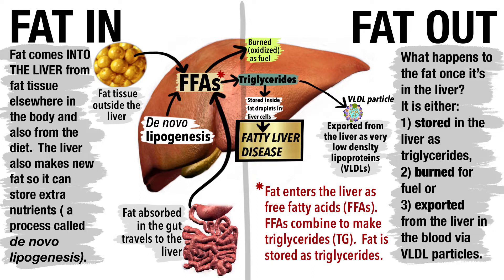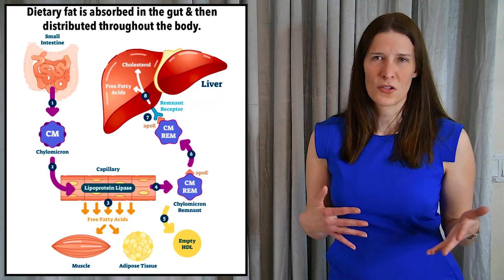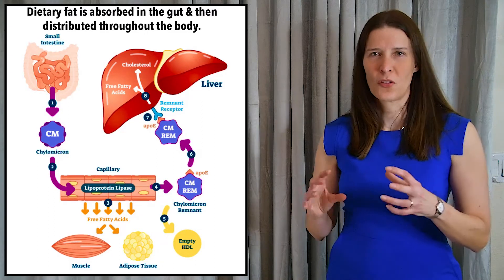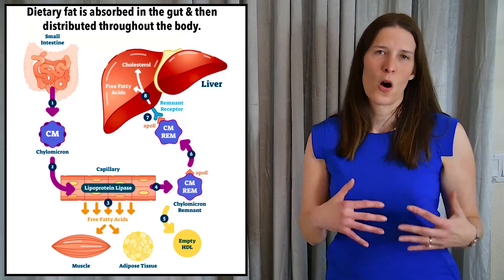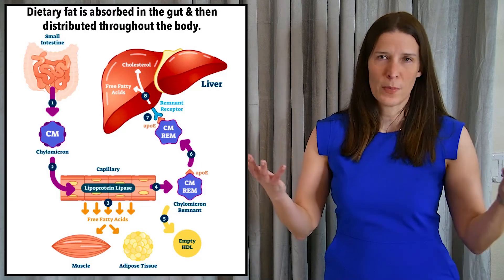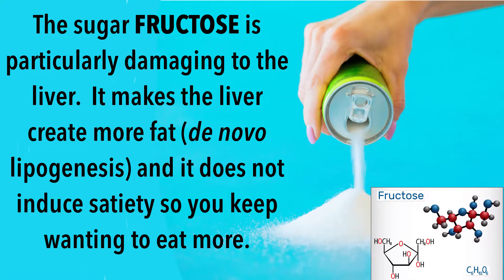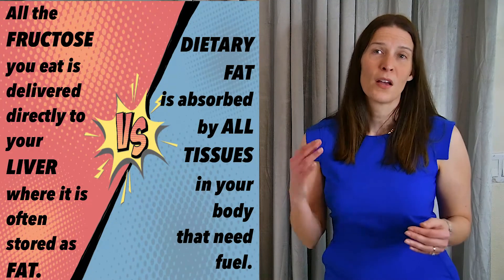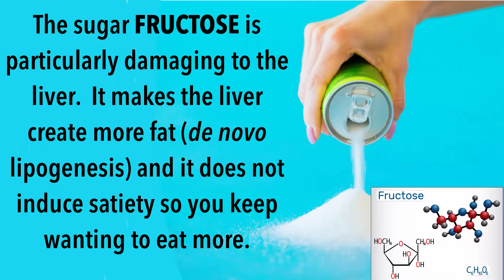This is in part because when fat is absorbed in the gastrointestinal tract, it is packaged inside chylomicrons, which are then distributed more widely to all the metabolically active tissues in the entire body. In contrast, sugars such as fructose are delivered directly to the liver from the GI tract via the portal vein, where fructose forces the liver to create more fat using de novo lipogenesis while using itself as a substrate.